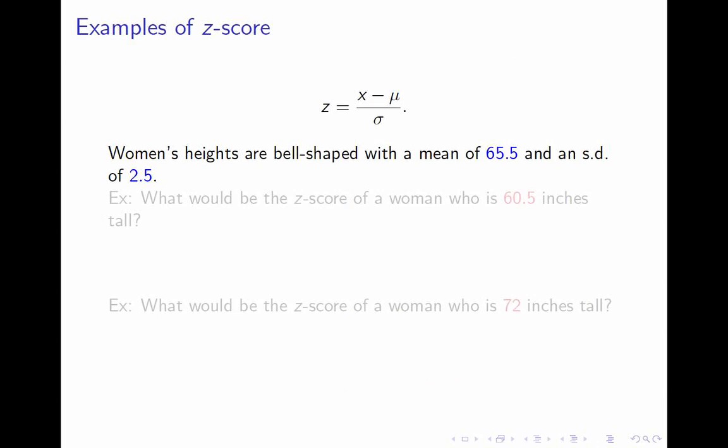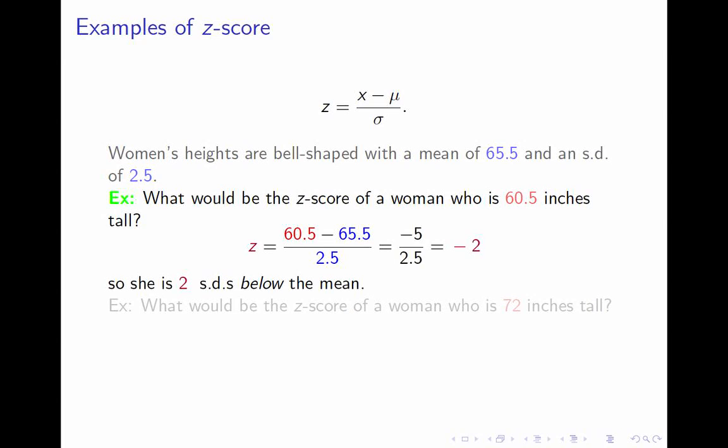Let me have you do two examples. So, first, what would the z-score of a woman who is 60.5 inches tall be? Pause the video. Work this out. Okay. 60.5, her height, minus 65.5, the mean gives you negative 5. You divide negative 5 by 2.5 and you get negative 2 and you conclude that she has two standard deviations below the mean. Below because it's negative.